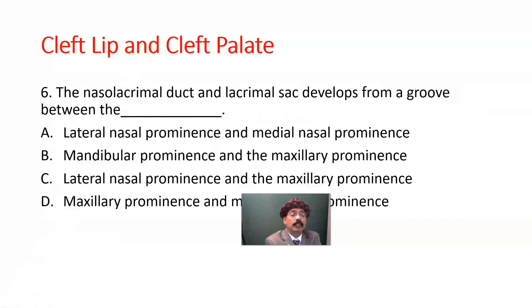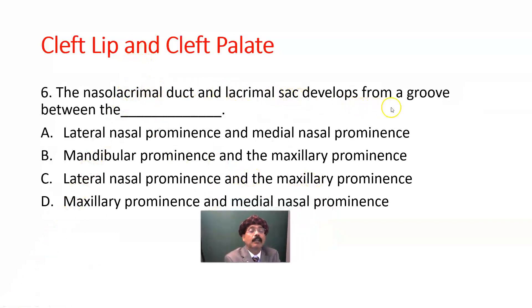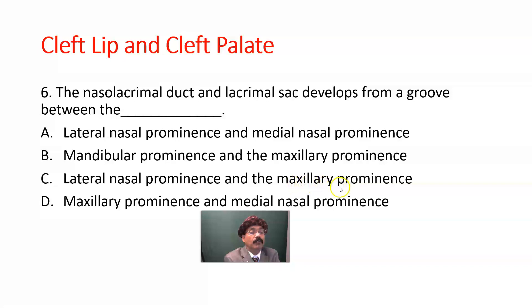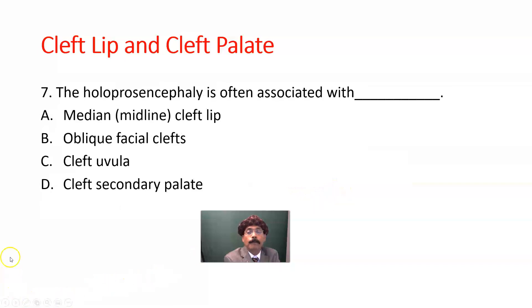Question six: The nasolacrimal duct and lacrimal sac develops from a groove between which prominences? A) Lateral nasal prominence and medial nasal prominence, B) Mandibular prominence and maxillary prominence, C) Lateral nasal prominence and maxillary prominence. The answer is C, between the lateral nasal prominence and maxillary prominence.